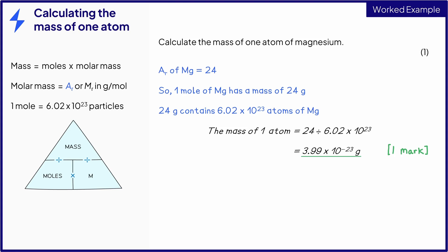This is the type of question that students frequently get wrong despite the calculation being relatively straightforward. Make sure that you check that your answer looks sensible. A common mistake is to multiply 24 by Avogadro's constant instead of dividing by it. This would give a really large number, which can't be correct as you know the mass of the atom is tiny.